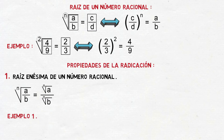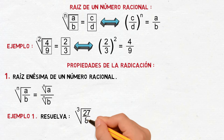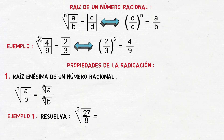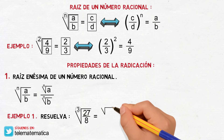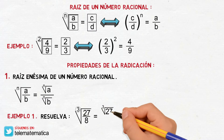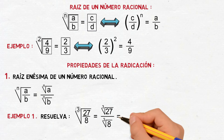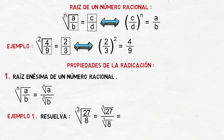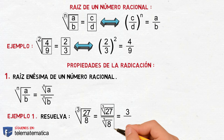Veamos un ejemplo. Resuelva: raíz cúbica de 27 octavos. Aplicando la propiedad, esto va a ser igual a escribir la raíz cúbica del numerador dividido para la raíz cúbica del denominador. Luego, resolviendo ambas raíces: la raíz cúbica de 27 es 3, y la raíz cúbica de 8 es 2. Este sería el resultado: 3 sobre 2.